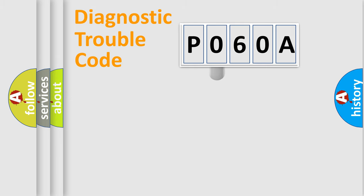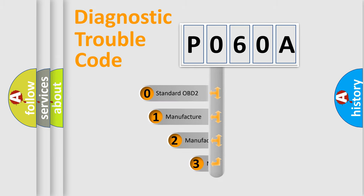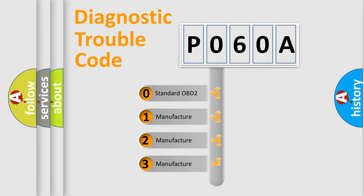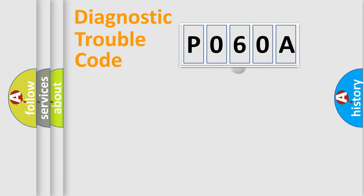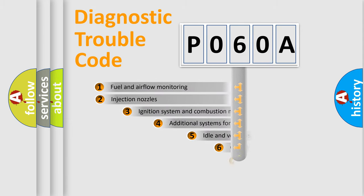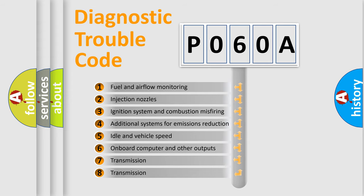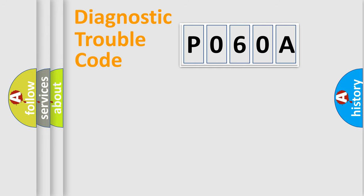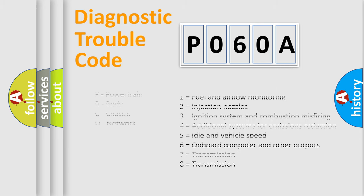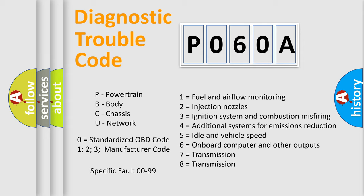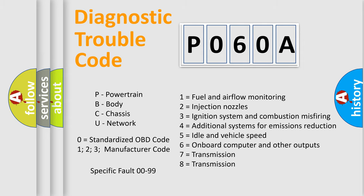This distribution is defined in the first character of the code. If the second character is expressed as zero, it is a standardized error. In the case of numbers 1, 2, or 3, it is a manufacturer-specific error. The third character specifies a subset of errors. This distribution is valid only for the standardized DTC code. Only the last two characters define the specific fault of the group, and this division is valid only when the second character is zero.